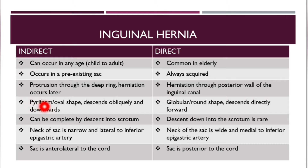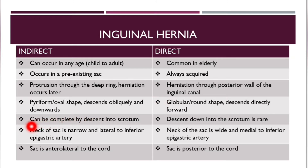Indirect hernia is pyriform or oval in shape and descends obliquely downward. Direct hernia is globular and round in shape and descends directly forward. Indirect hernia can be complete by descending into the scrotum, but in direct hernia they rarely descend into the scrotum.